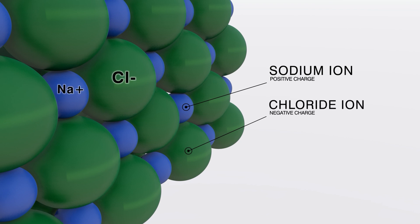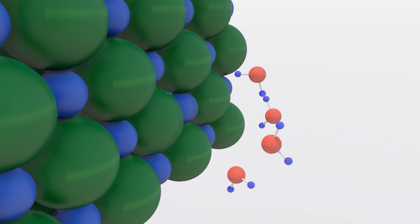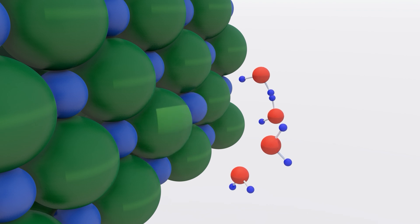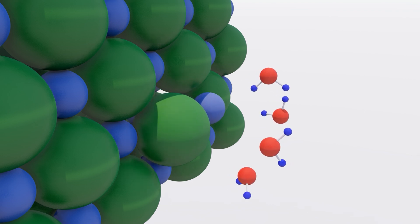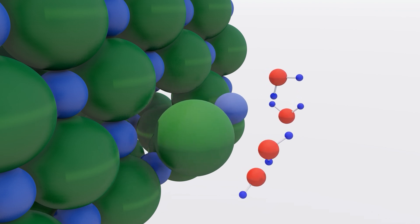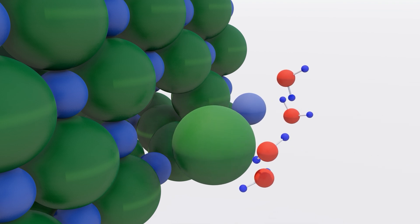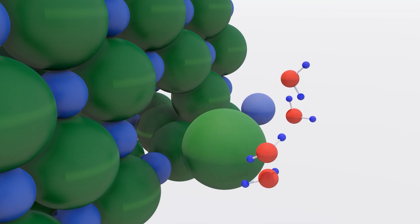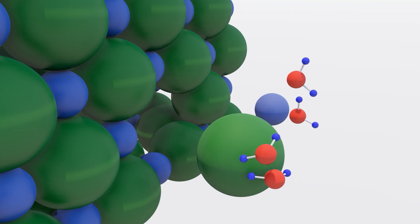Because these elements have a charge, they are referred to as ions instead of atoms. When introduced to water, the water molecules are attracted to these ions. The positive part of the water molecule, the hydrogen atoms, are attracted to the chloride ions, whereas the negatively charged oxygen atom is attracted to the sodium ions. This attraction generates a force that is stronger than the ionic bonds holding the sodium and chloride ions together, so the crystal structure starts to break.